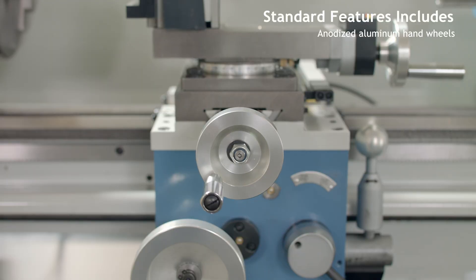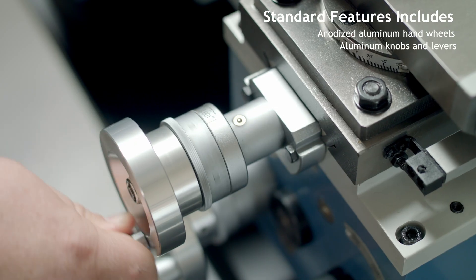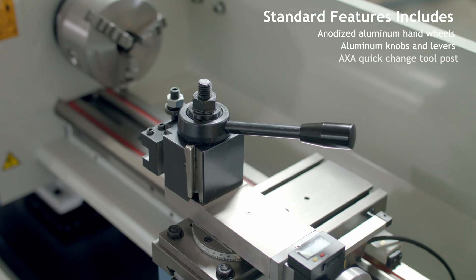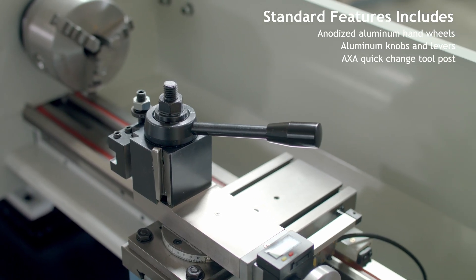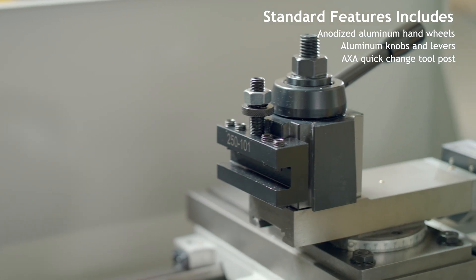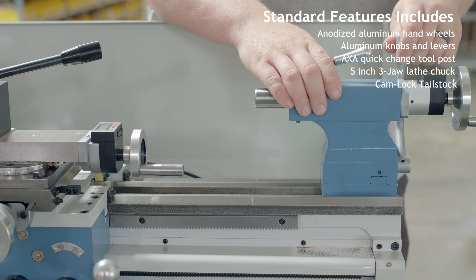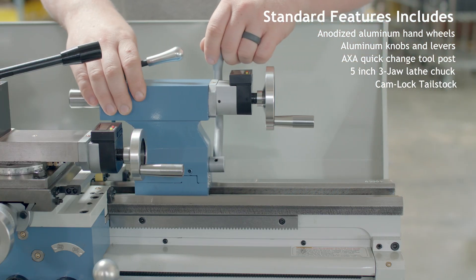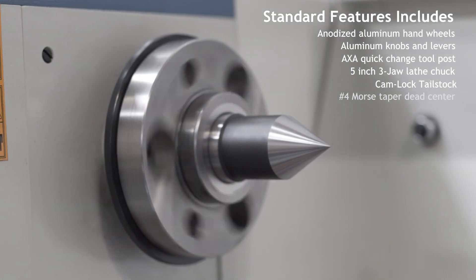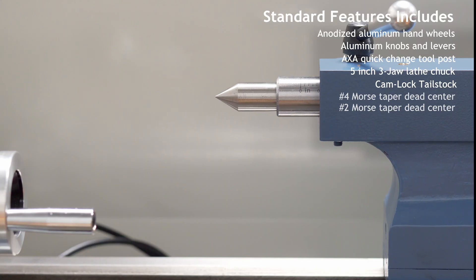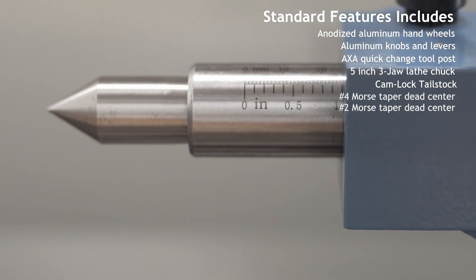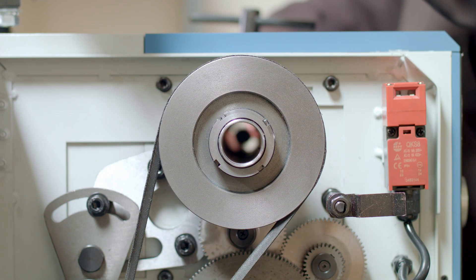Accessories include anodized aluminum handwheels and aluminum knobs and levers, an AXA quick-change tool post standard with five tool holders, a 5-inch 3-jaw self-centering lathe chuck, a standard cam lock tailstock, a number 4 Morse taper dead center for the headstock, and a number 2 Morse tapered dead center for the tailstock.